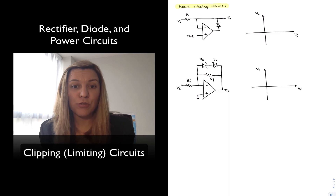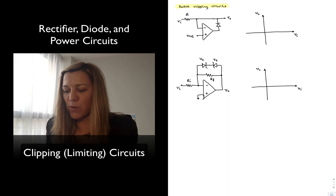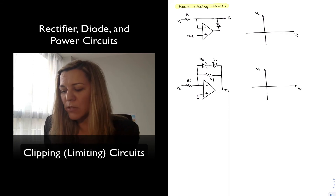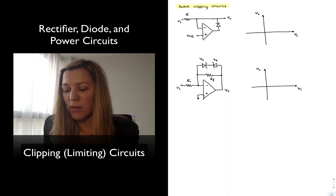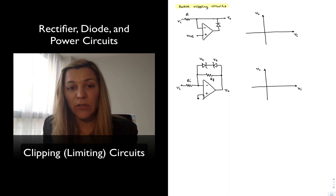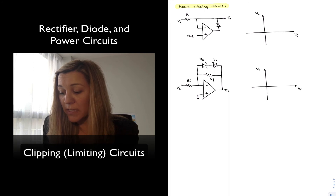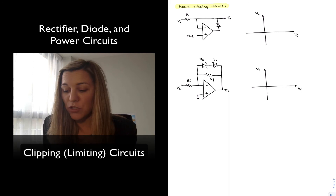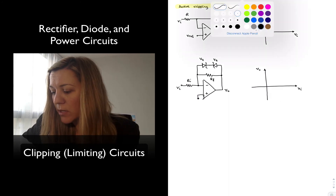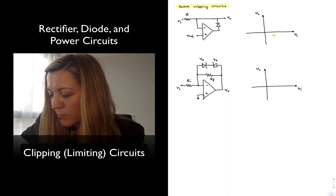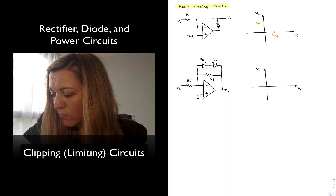We are going to take a look now at a couple of versions of active clipping circuits. The first one involves a diode and a resistor just like before, but we have added an op-amp to make it an active circuit. Notice the diode is connected in the feedback path of the op-amp. For input values below the reference voltage — set at the positive input terminal of the op-amp — there is a positive differential voltage across the op-amp, so the op-amp output tries to go high. The diode turns on and clamps the output voltage to the value of Vref because of the negative feedback path. So for VIN lower than Vref, VOUT is clamped at Vref.